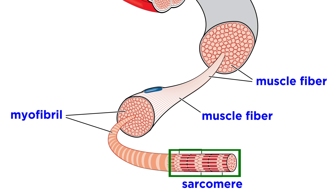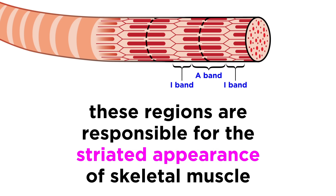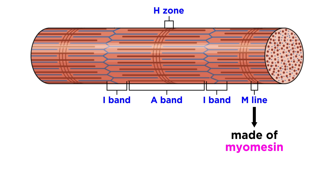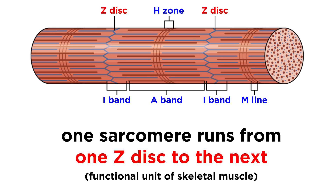Now let's get a closer look at these structures, because this is where all the action happens. Looking at a sarcomere, we can label a few regions. We can see these darker A bands and the lighter I bands, which are aligned and responsible for the striated appearance of skeletal muscle. Within each A band, we can find a lighter region called the H zone, and this H zone is split down the middle by something called the M line, made of a protein called myomycin. The I bands are also split down the middle by a region called the Z disc. We can identify an individual sarcomere as being a section from one Z disc to the next, and this is the functional unit of skeletal muscle.